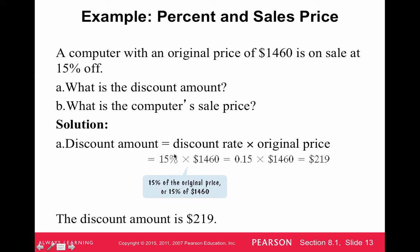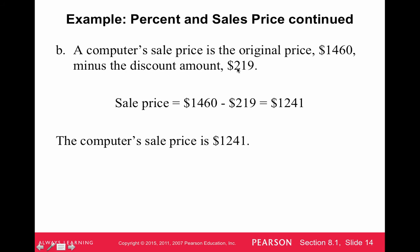So, in order to do 15% of $1460, you convert 15% to a decimal, multiply by $1460, and you get $219. The discount amount is $219. So to figure out what the computer's sale price is, we're just going to subtract the $219 discount from the actual price, or the original price, excuse me, and we get $1241. So the computer's sale price is $1241.